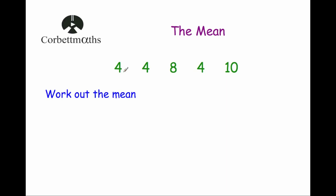So here we've got the numbers 4, 4, 8, 4 and 10. If we were to work out the mean for these numbers, we would just add them up and then divide by 5 because there are 1, 2, 3, 4, 5 numbers and that's it.